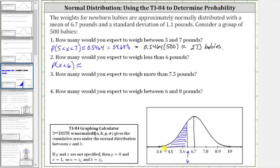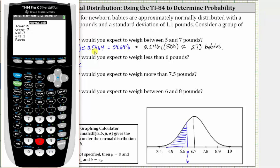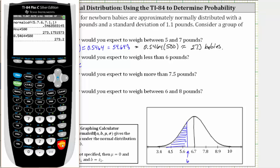Going back to the calculator, we press second vars, number two. Because we're looking for all the area to the left, we will need to exaggerate the lower bound or left bound. Let's use negative 999999. Enter. The upper right bound is six. Enter. Mu and sigma remain the same. So we go down to paste, press enter, and press enter again. To four decimal places, we have approximately 0.2623.